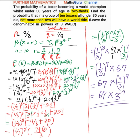So the probability that in a group of 10 boxers all under 30 years old, not more than 2 will have a world title, is equal to 67 times 3 raised to the power of negative 9. Thanks for watching MassGo's video. Please don't forget to subscribe — it's very important — and follow us as we release the next video.